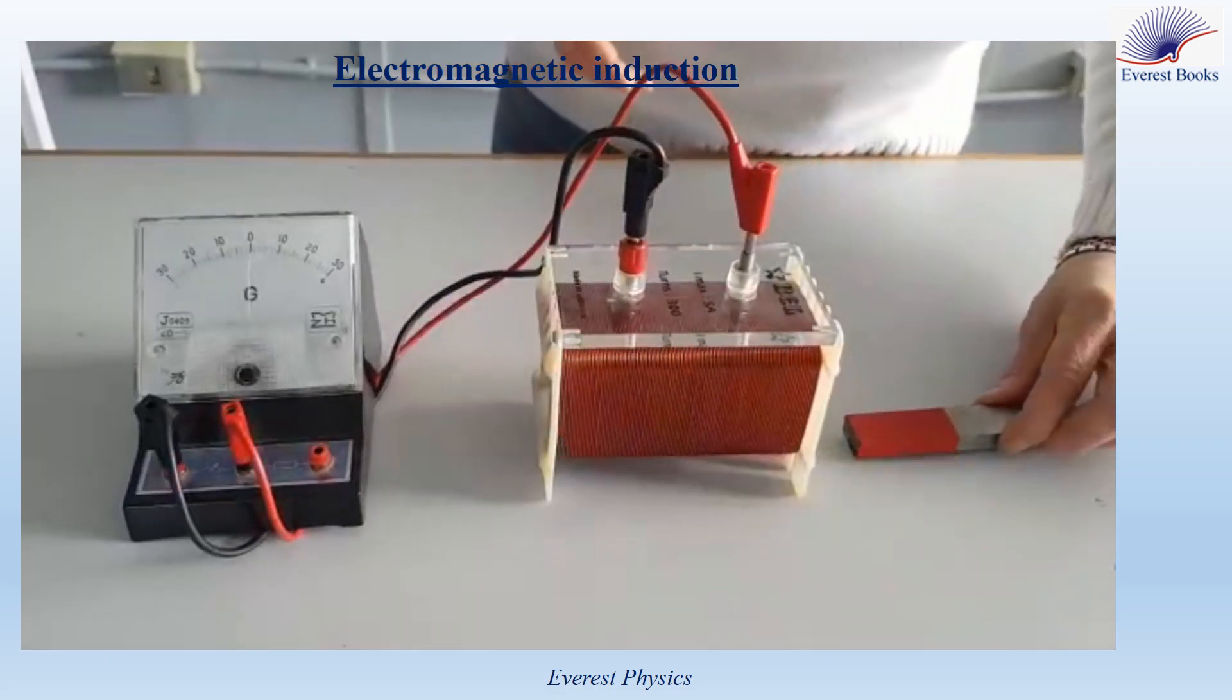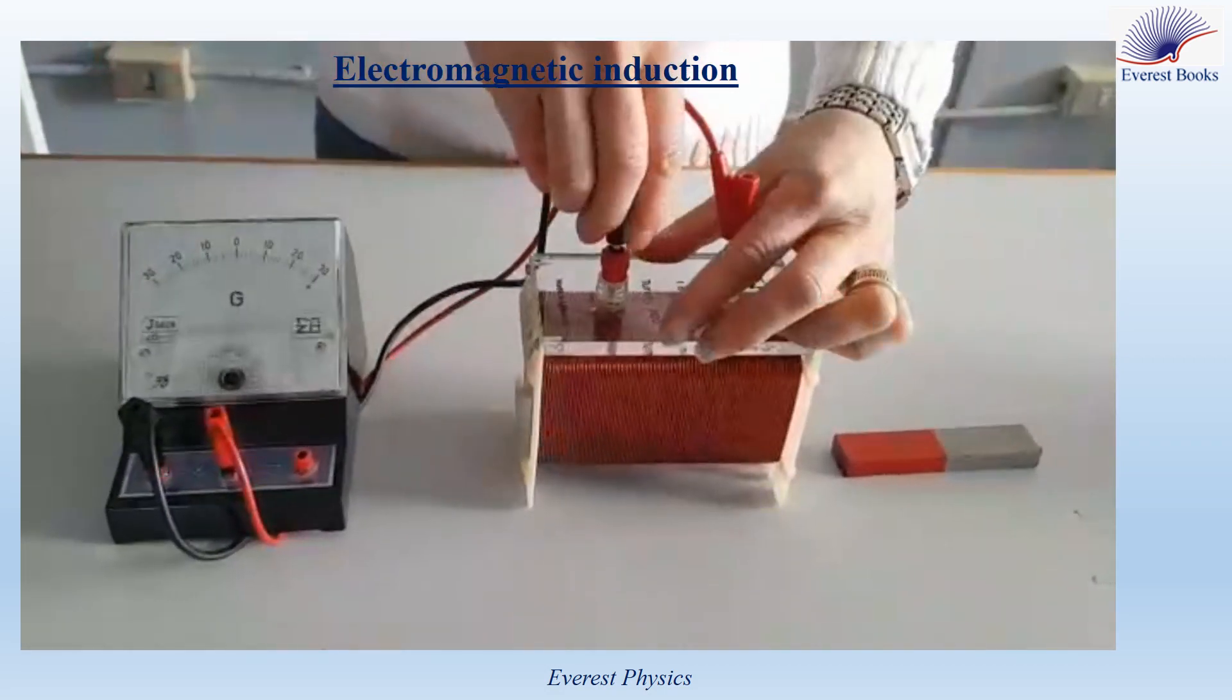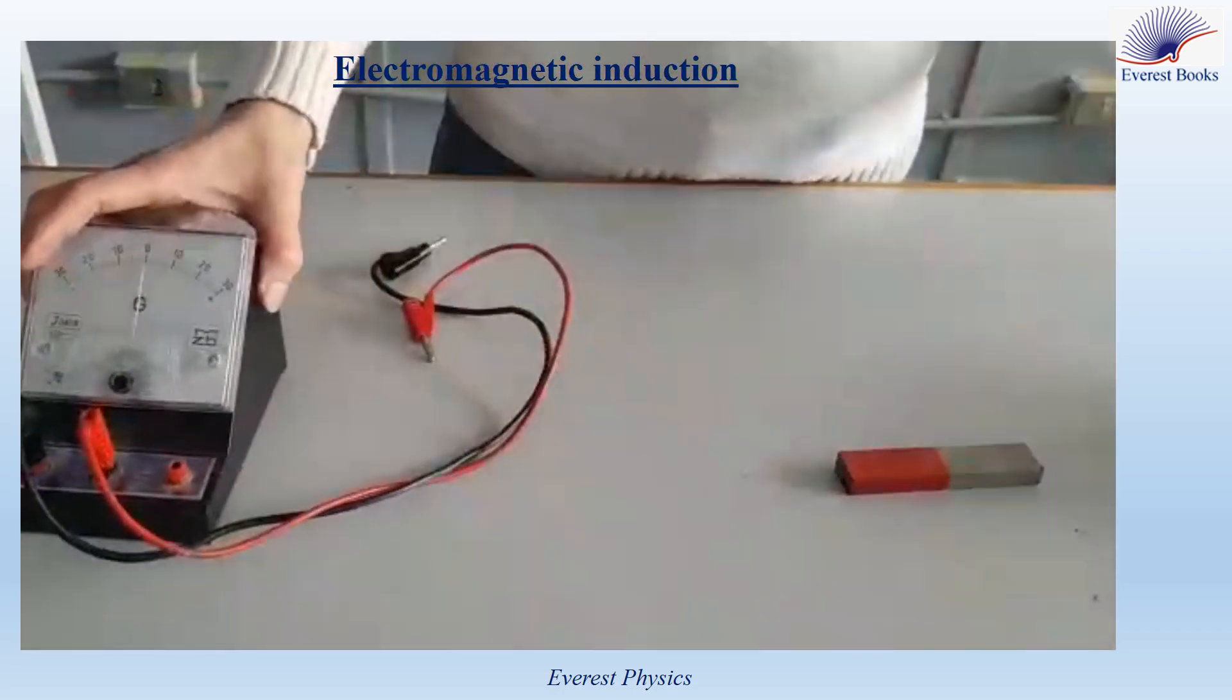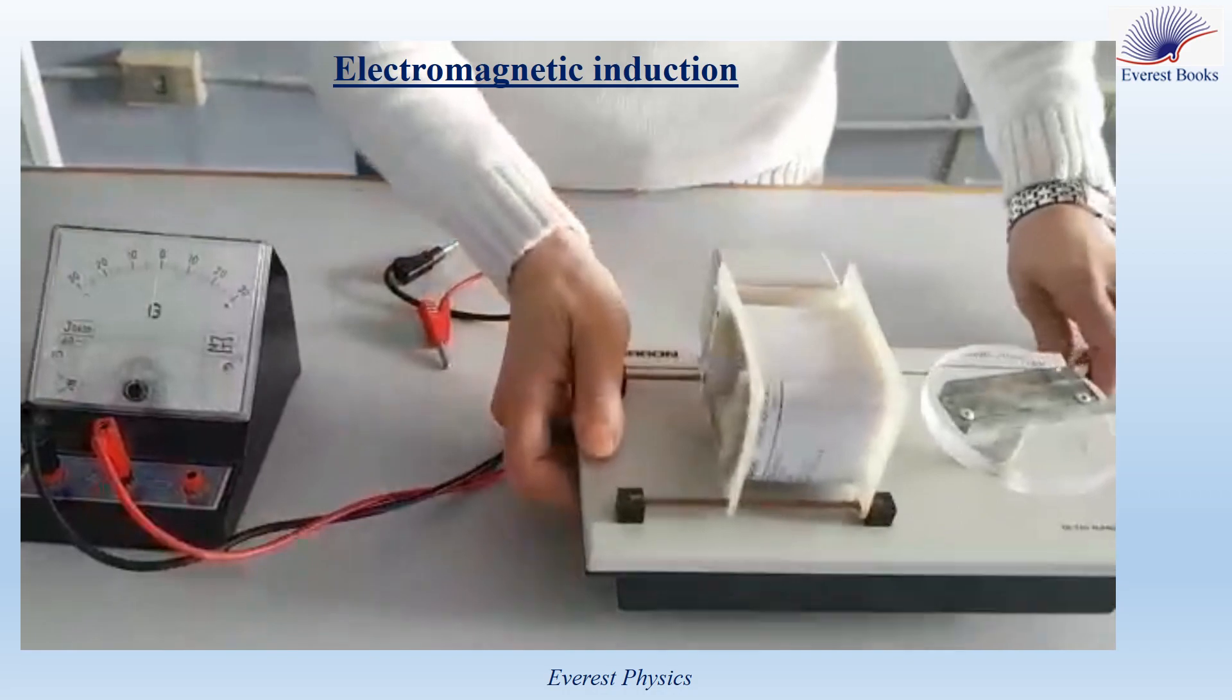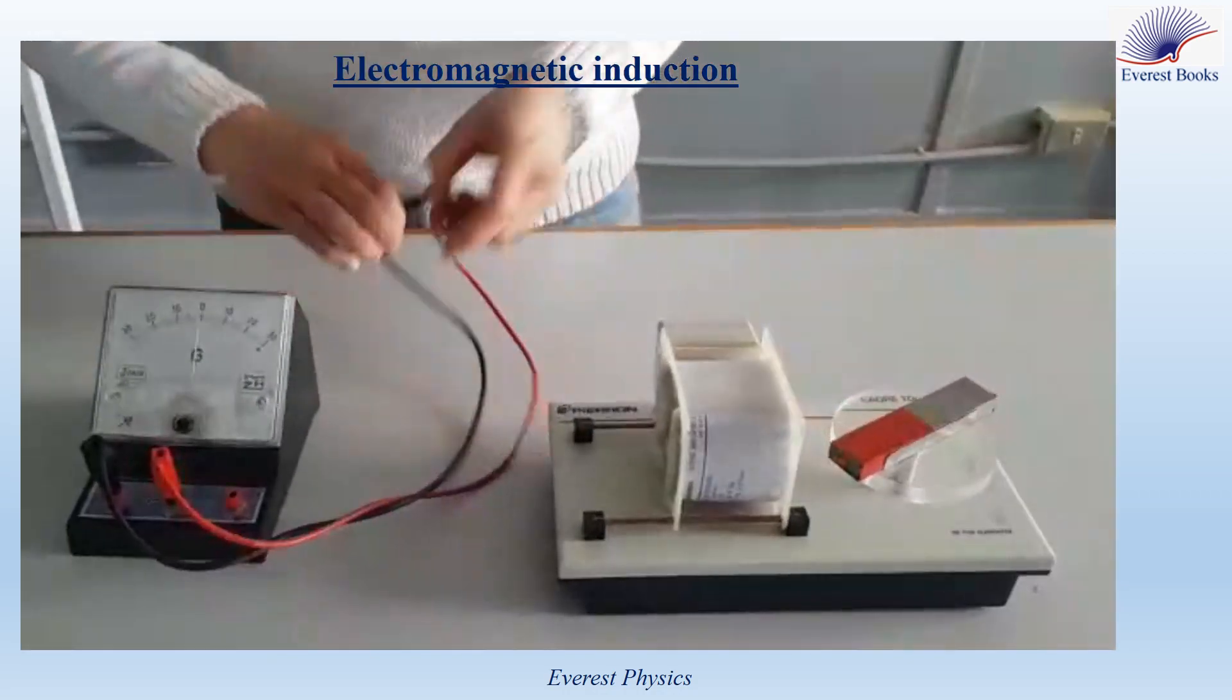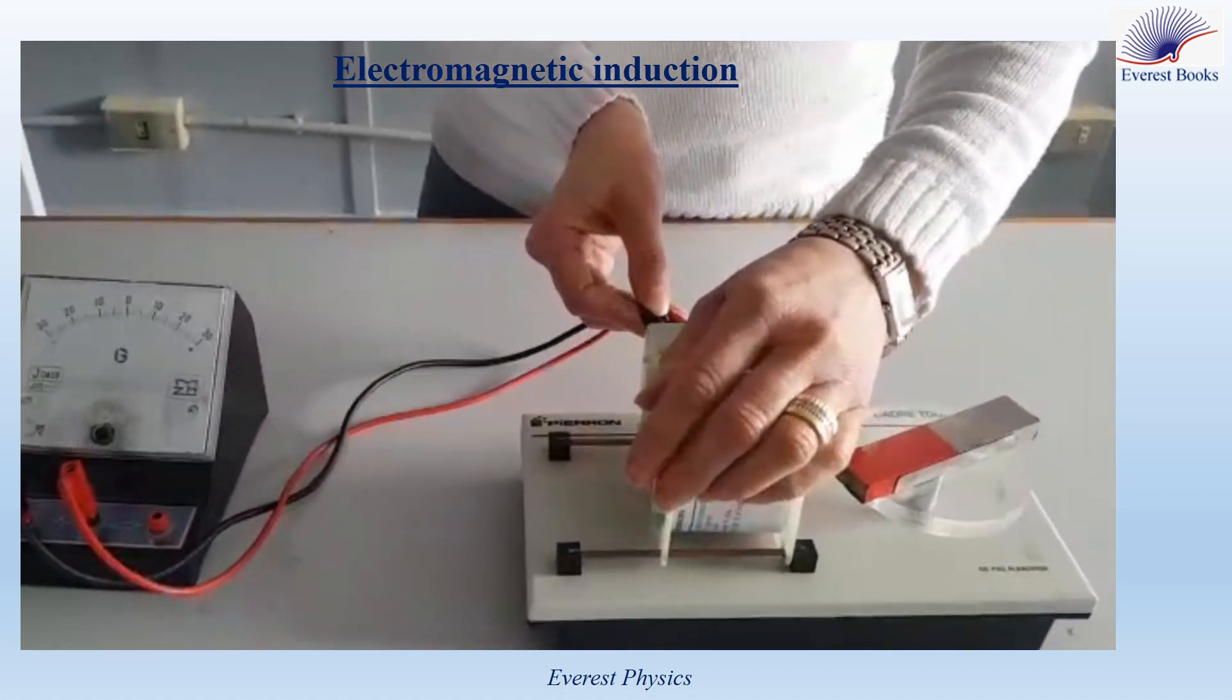Now we move the magnet and the coil in a straight path. Do we obtain the same result? What if we rotate the magnet beside the coil? Let's see.